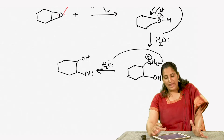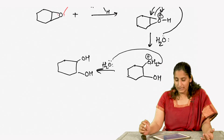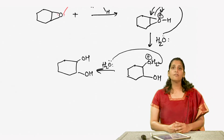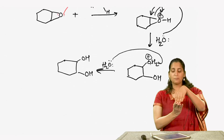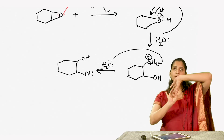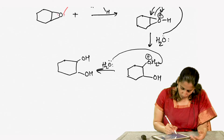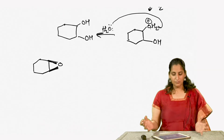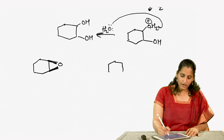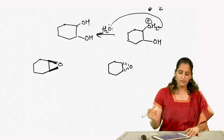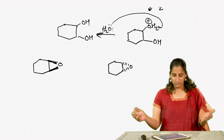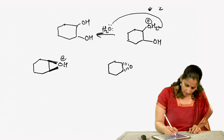In the next step, another water molecule will come and deprotonate that protonated water to give you a glycol. Now, any epoxide especially on a ring will be formed such that either the epoxide ring is coming towards you or going away from you, so there are two ways to represent this epoxide. When it gets protonated it is going to look accordingly.